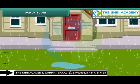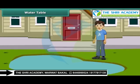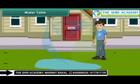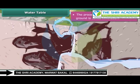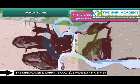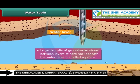You just witnessed heavy showers in your locality. Huge puddles have formed. A few hours later, the puddles are nowhere to be seen. Where has all the water disappeared? It has seeped into the ground. This process of water seeping into the ground is called infiltration. Ground water gets recharged by this process. Large deposits of ground water stored between layers of hard rock beneath the water table are known as aquifers. Water in aquifers is usually pumped out by digging wells at locations where the water table is close to the surface of the ground.